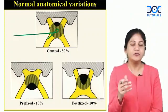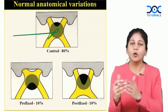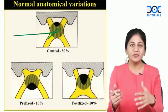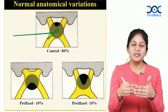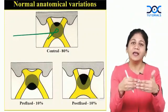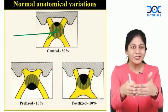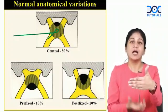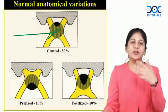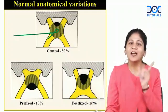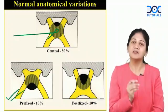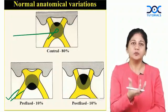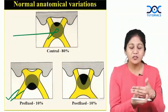What if your chiasma is pre-fixed? Pre-fixed means your chiasma is slightly anteriorly located. When it is anteriorly located and a pituitary tumor comes in, it is going to compress your optic tract first. This is very important — this is called a pre-fixed chiasma, where the pituitary tumor compresses the optic tract first.